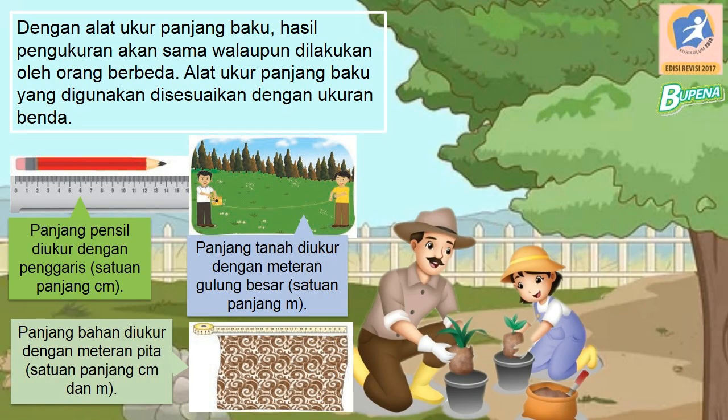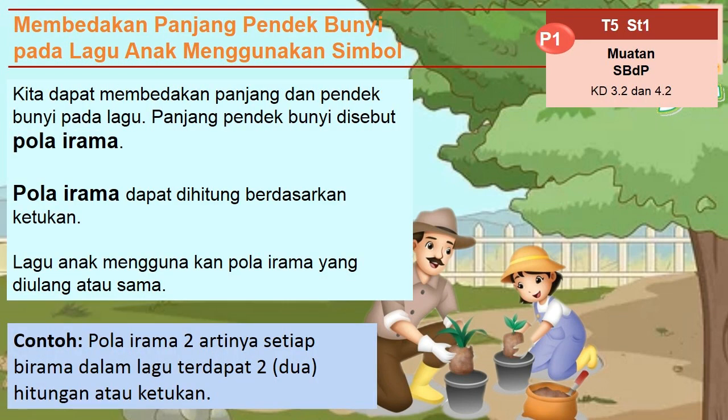Anak-anak, setelah kita tadi belajar mengukur panjang sebuah benda dengan menggunakan satuan panjang baku, maka kita sekarang belajar membedakan panjang pendek bunyi pada lagu anak menggunakan simbol. Kita dapat membedakan panjang dan pendek bunyi pada lagu. Panjang pendek bunyi disebut pola irama. Pola irama dapat dihitung berdasarkan ketukan. Lagu anak menggunakan pola irama yang diulang atau sama.